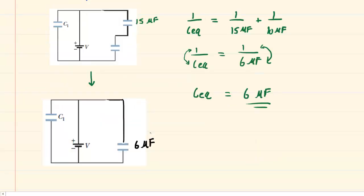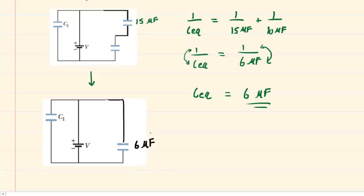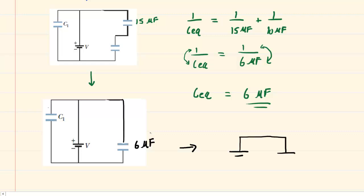Finally, we note that these last two capacitors right here are in parallel with one another. When we combine them, we simply add their capacitance values. This one right here is 10 microfarads, so adding them together will create an equivalent capacitance of 16 microfarads. We redraw the circuit one final time, and we have a single equivalent capacitor of capacitance 16 microfarads.